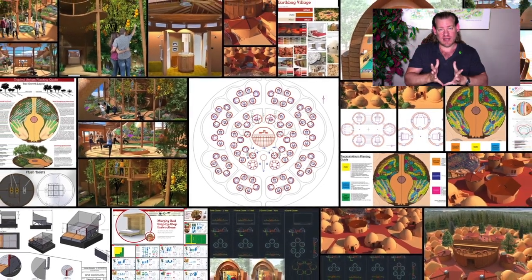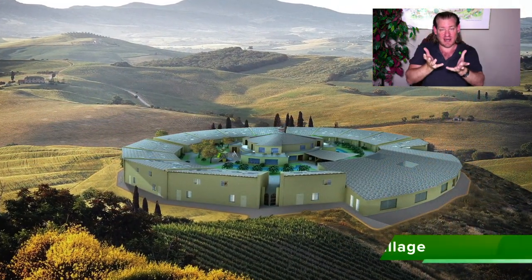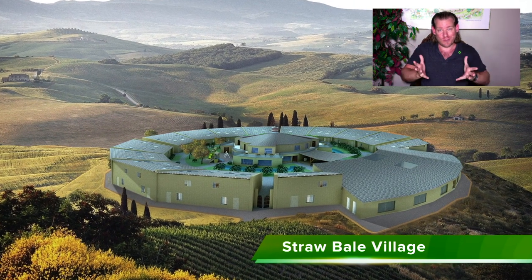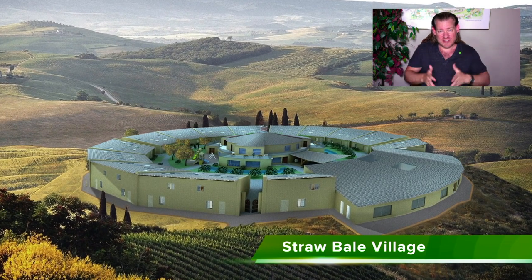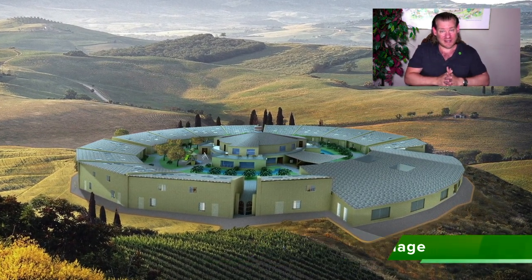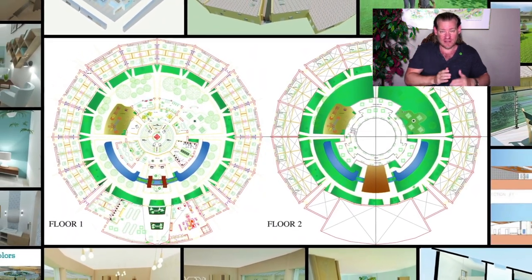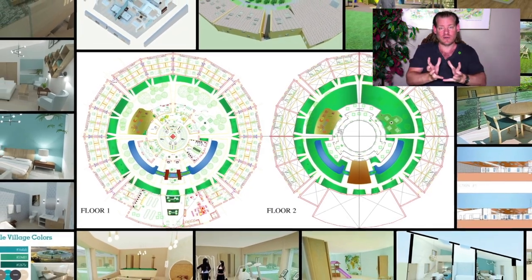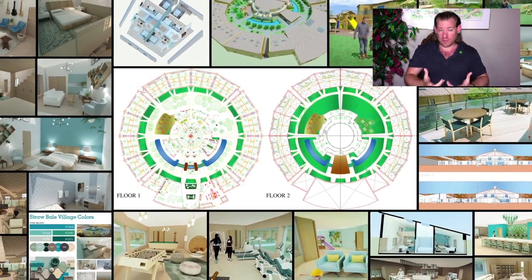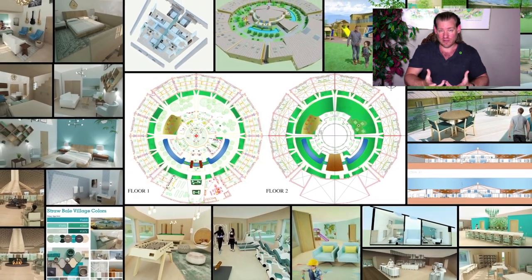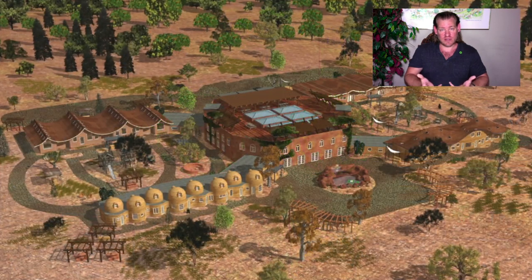We want to demonstrate that on the community level by bringing together people with the consciousness and the desire for the highest good of all people and life on this planet, and open sourcing and free sharing all the tools, tutorials, resources, and do-it-yourself instructions for replicating everything that we're designing in food, housing, energy, fulfilled living, education, economics, stewardship, and all these different categories so that people have what they need to build comprehensively sustainable, fulfilling, enriching, thriving environments as eco-communities and teacher demonstration hubs.